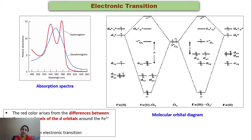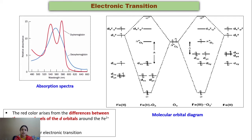Looking at electronic transitions in oxyhemoglobin and the molecular orbital diagram, the red color of hemoglobin arises from differences between energy levels of the d orbitals around the ferrous ion, as well as from charge transfer electronic transitions from stable pi and low-lying pi-star orbitals. The effective delocalization around the planar porphyrin ring also supports the red color of hemoglobin.